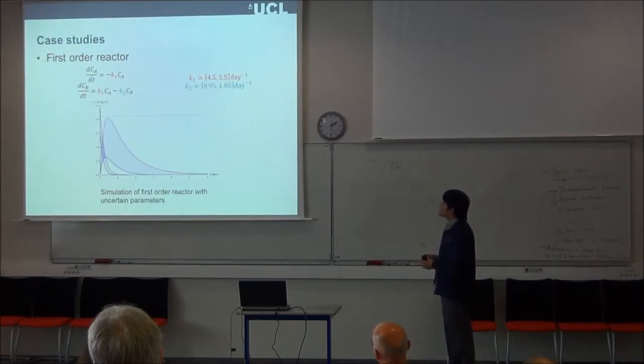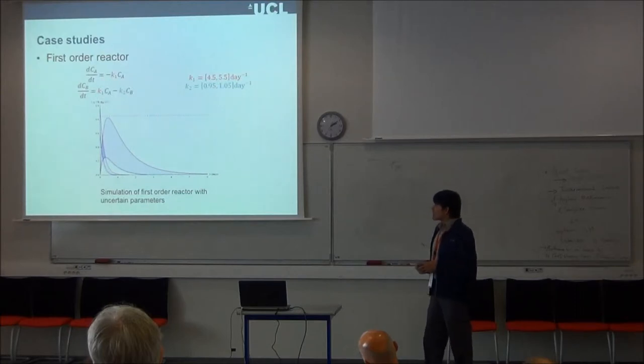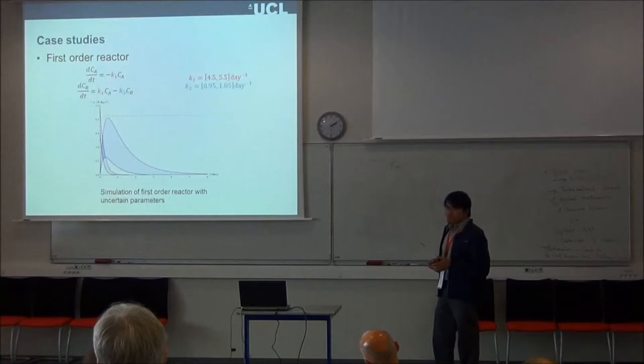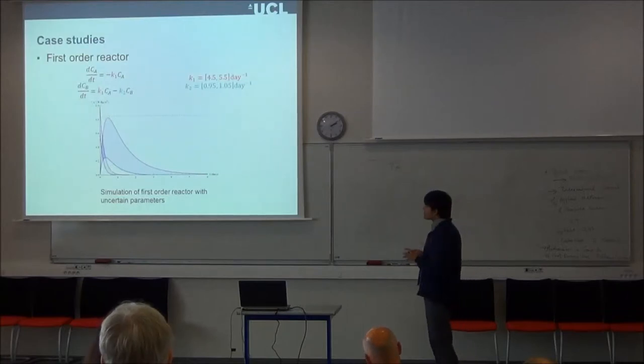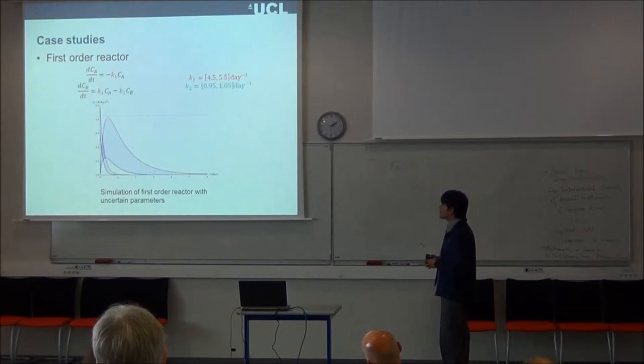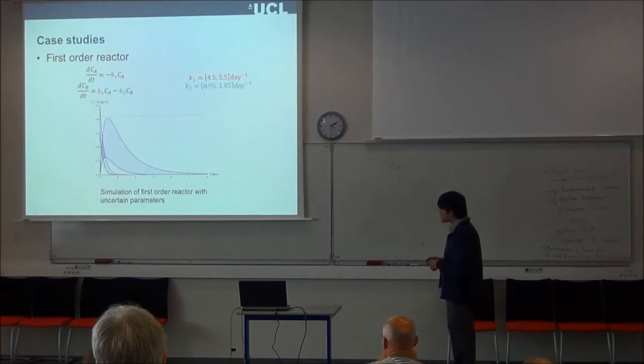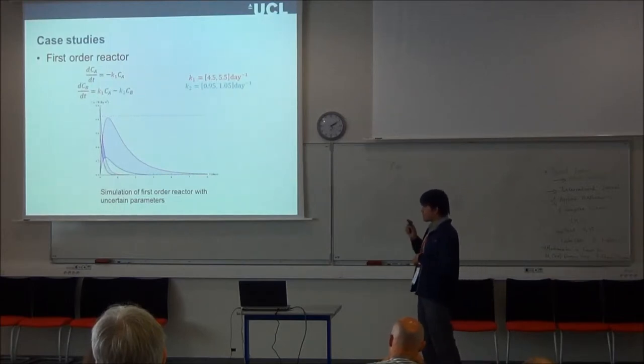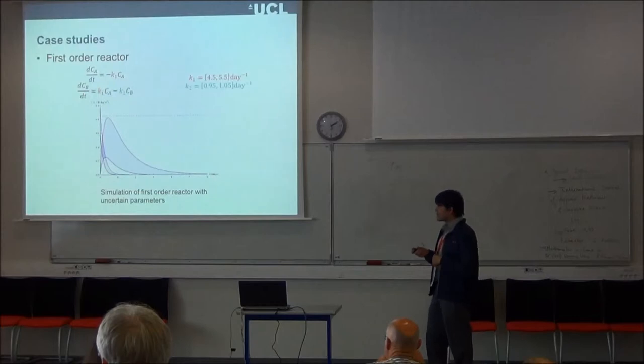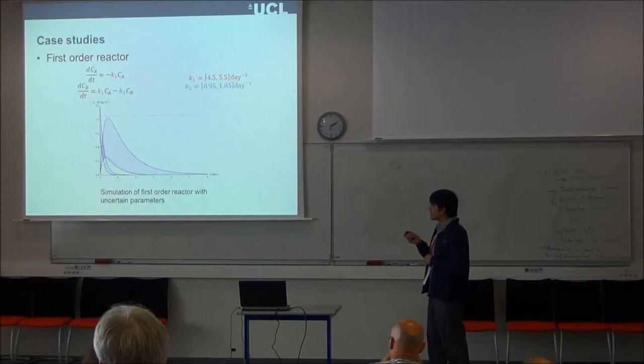So the first case study is, of course, first order reactor. This is a simple reaction in a batch reactor. It has two reactants and we have to obtain a product. We have used some interval parameters here, and we have performed the dynamic simulation for which we have obtained these very good bounds. And we have set this safety constraint which is not to be crossed when it is performed.